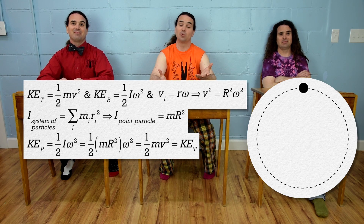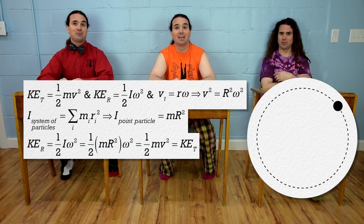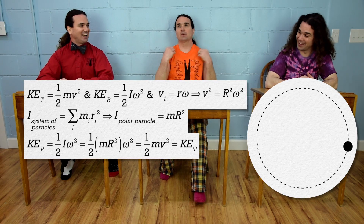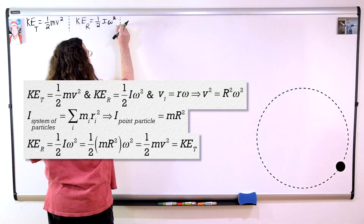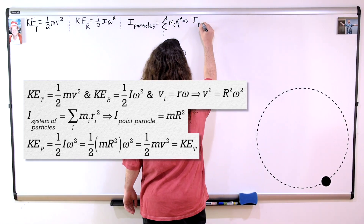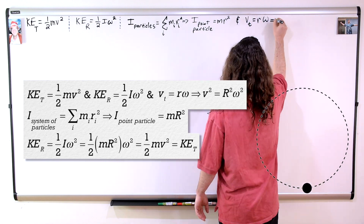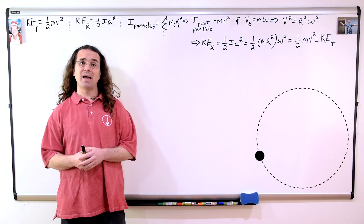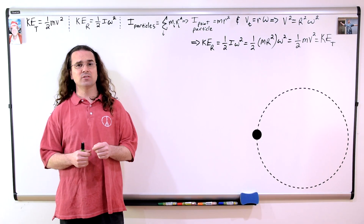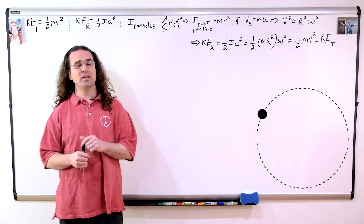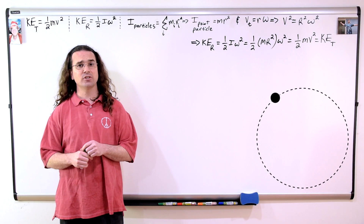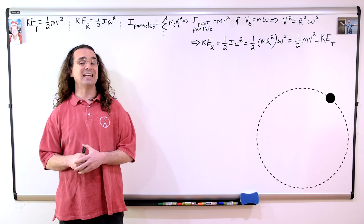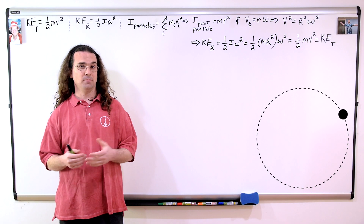We can use either the translational or rotational kinetic energy equation for a point particle moving in a circle. We were both right! It is correct that the translational and rotational kinetic energy equations are equivalent for a point particle moving in a circle.